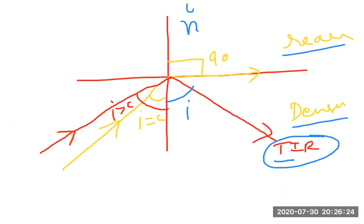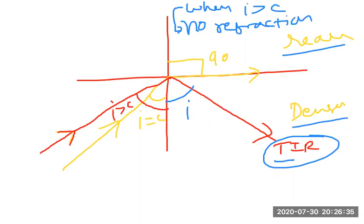When I is greater than C, there is no refraction — only reflection. When I equals C, the ray grazes on the surface and the refracted angle R is 90 degrees. But when I is greater than the critical angle, Total Internal Reflection takes place.